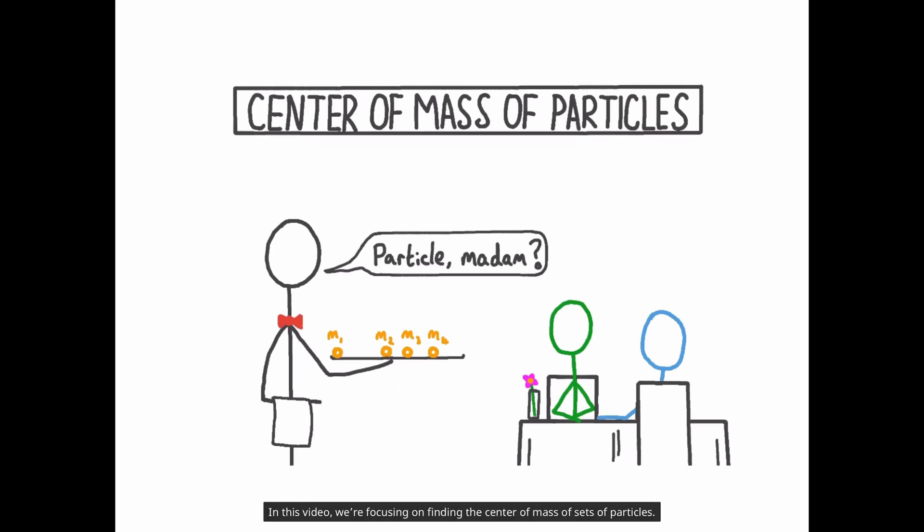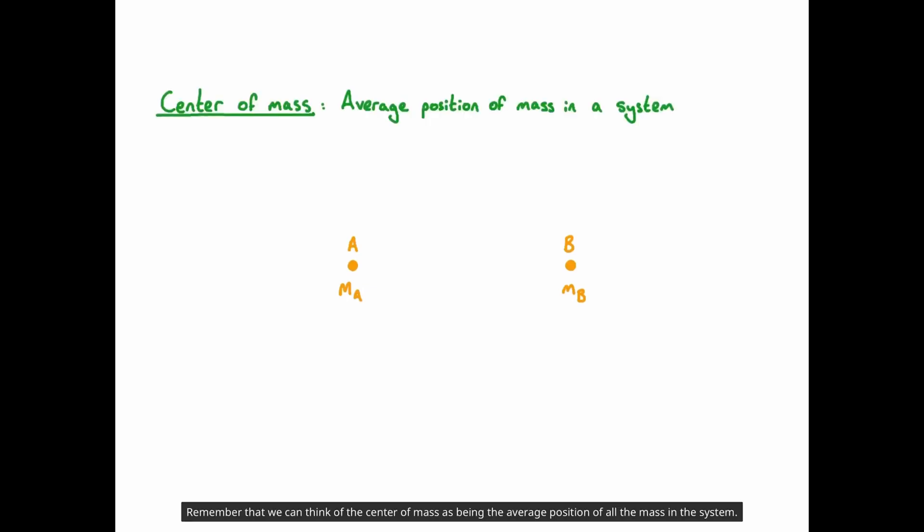In this video, we're focusing on finding the centre of mass of sets of particles. So let's start with a simple example. Let's say we have two particles named A and B, with masses mA and mB respectively. Note that when we say particle, we simply mean an object with negligible size. Remember that we can think of the centre of mass as being the average position of all the mass in a system.